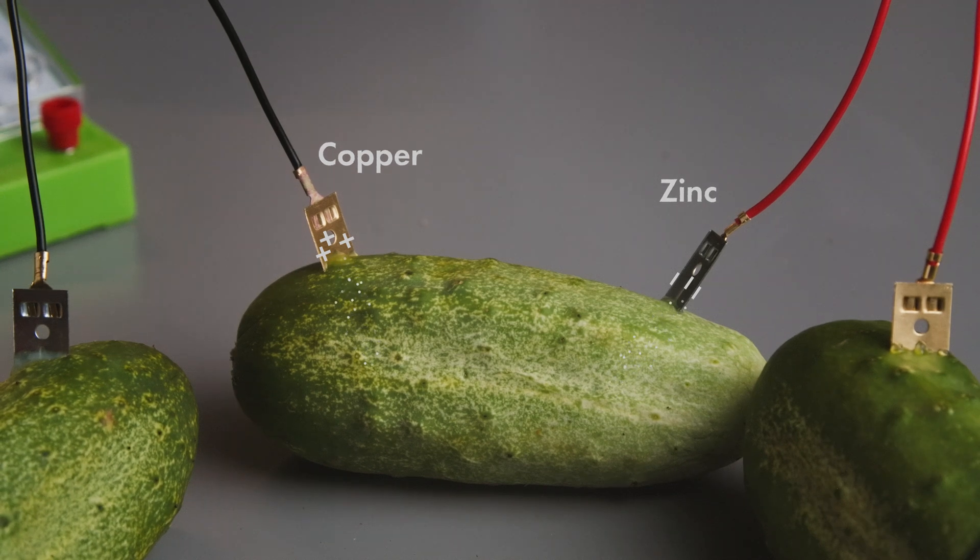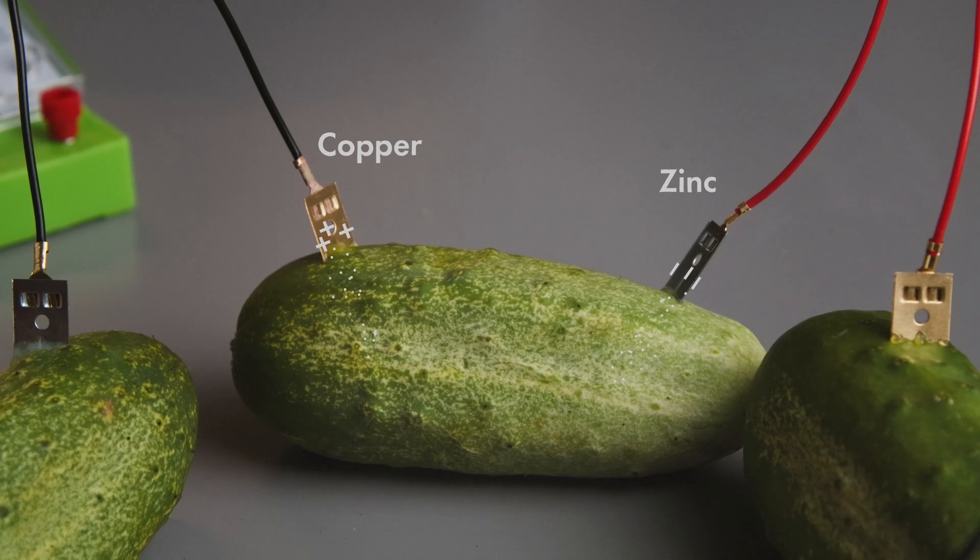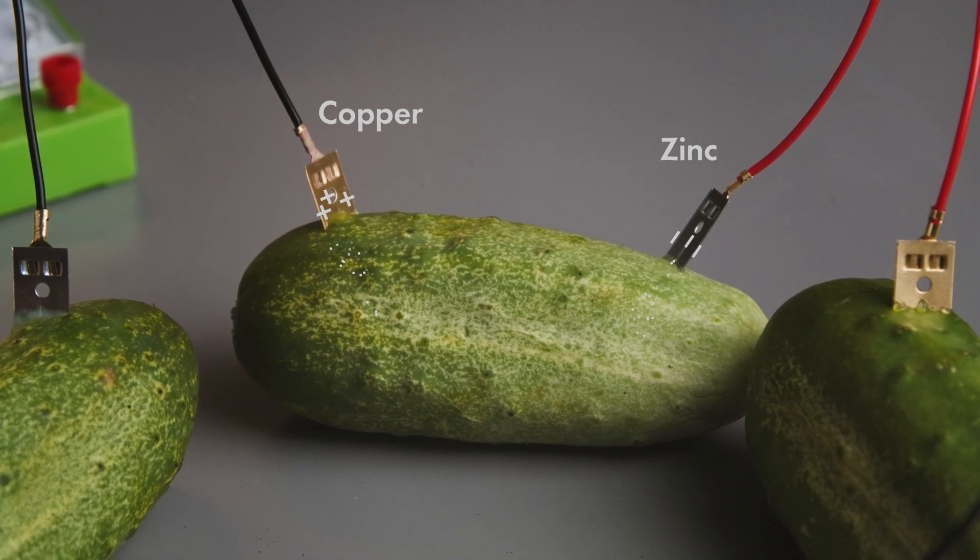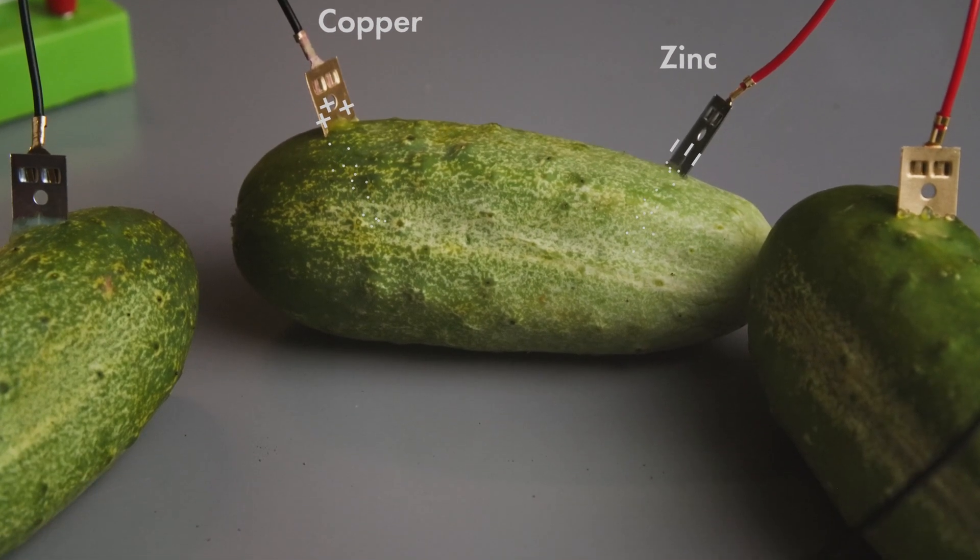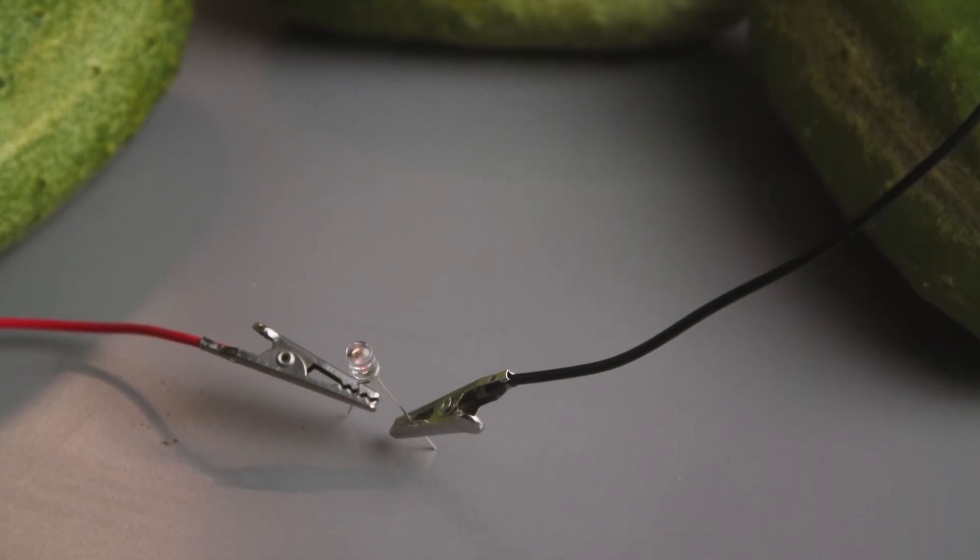These substances allow ions to freely move through them. Then the electrons slowly build up on the zinc cathode, and once a wire is attached, will flow through the wire and the LED will be on.